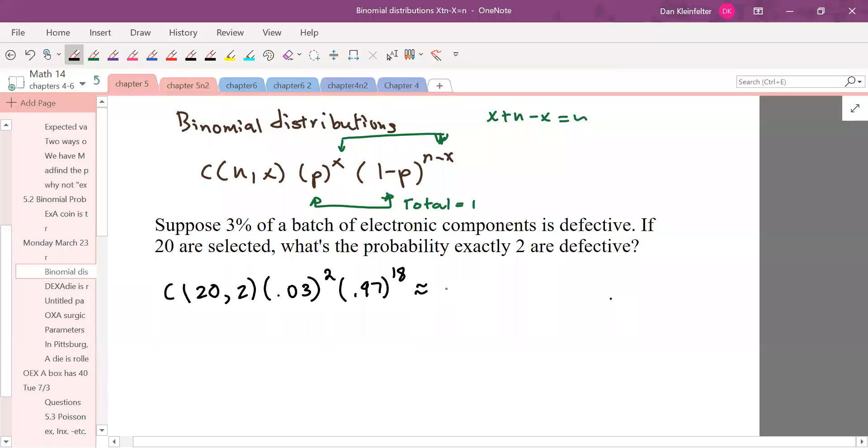So then let's go ahead and calculate that. So the combination piece works out to 190. As you're doing these calculations, it's a good idea to try to keep as much of the calculation in your calculator as you can. And it looks like about 0.0988. That's how that shapes up.